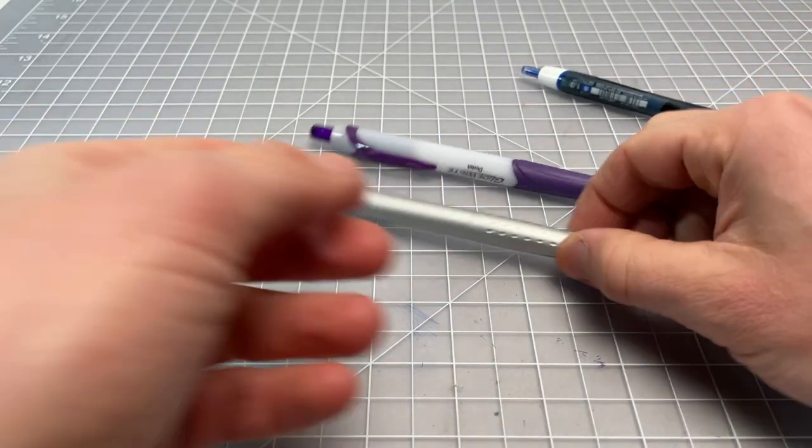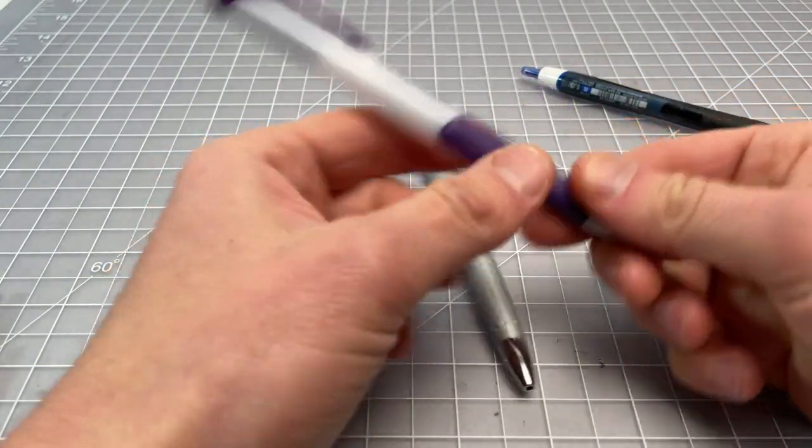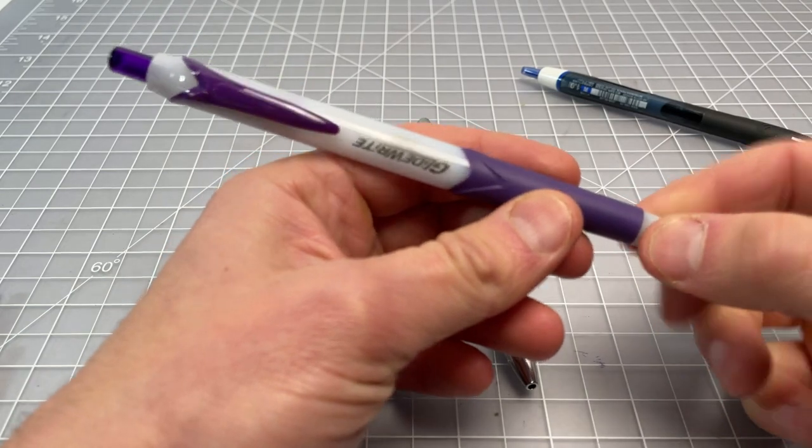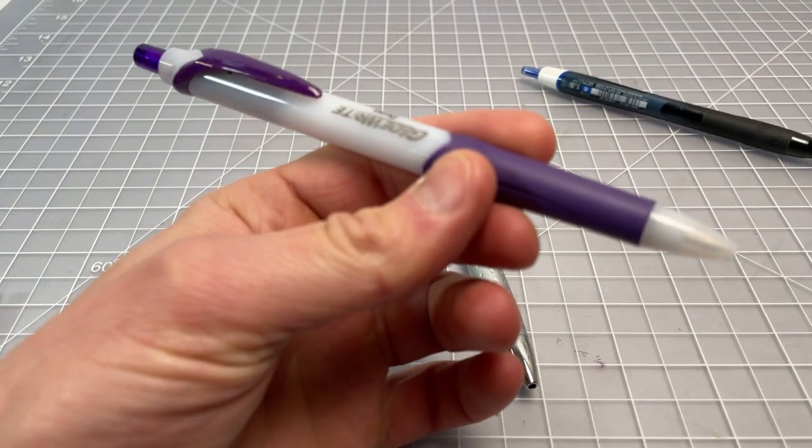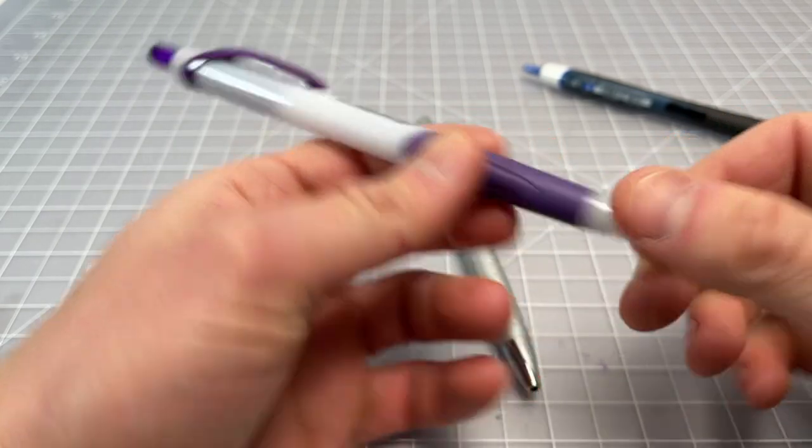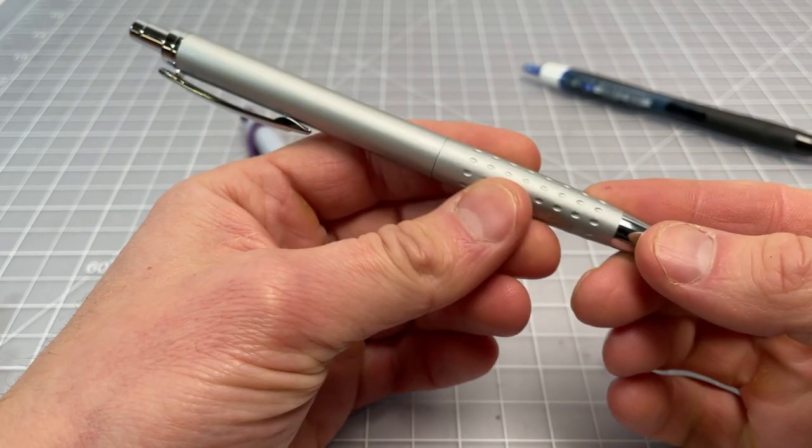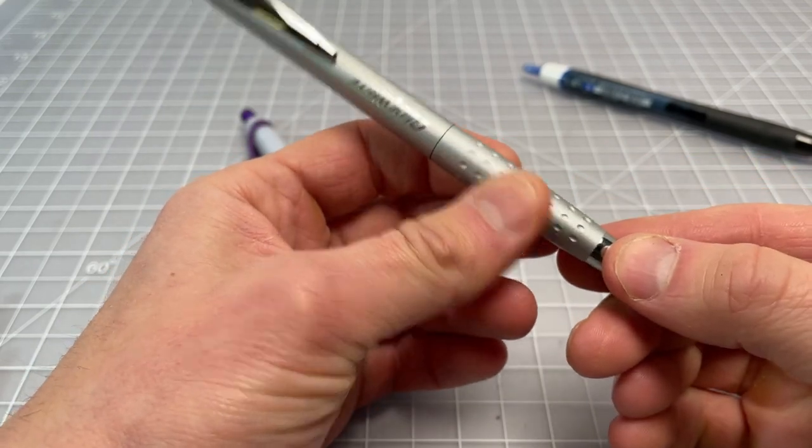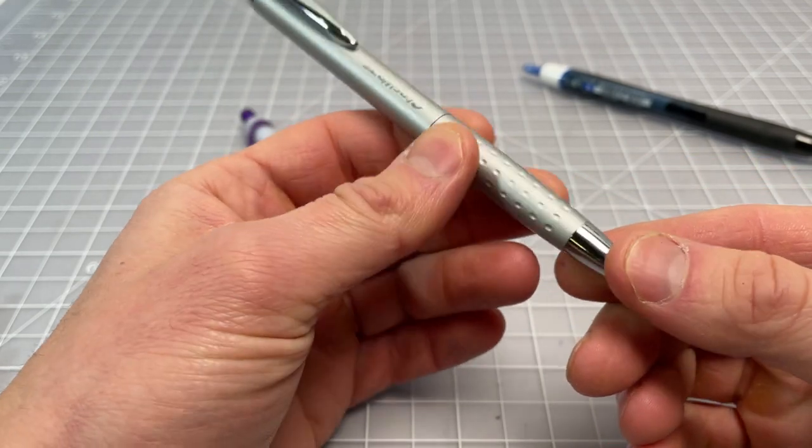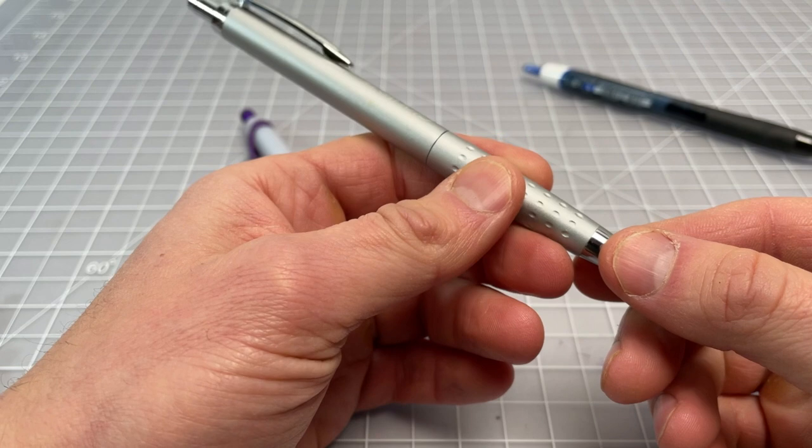We have the executive version, the standard version. Between the two, I actually have to say I prefer writing with the standard one. It has this rubberized grip here, which I actually find to be more comfortable than the sort of metal dimpled grip. The metal grip is just a little bit slippery for me. It looks pretty cool, but I don't find that it really handles that well. It's just sort of slippery.